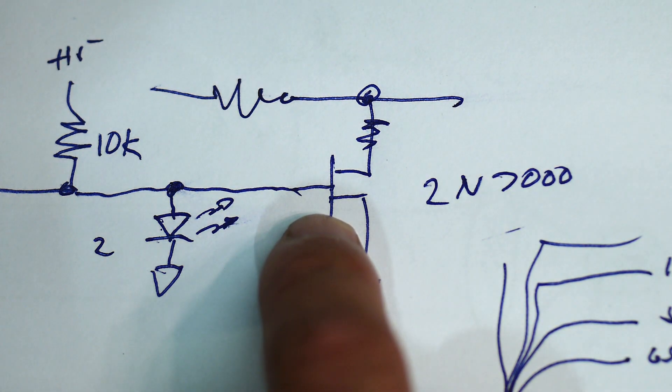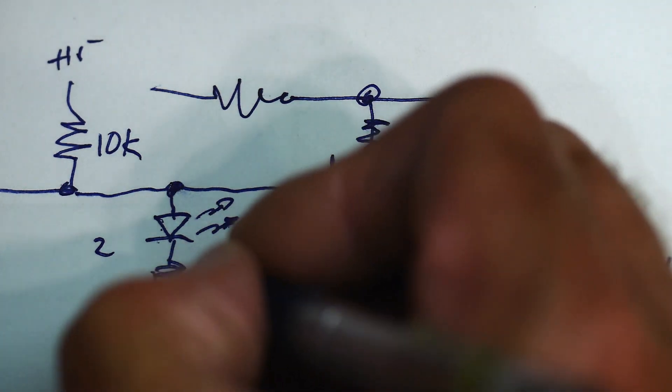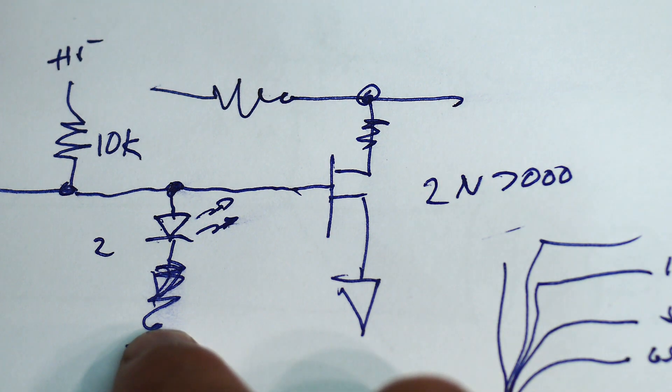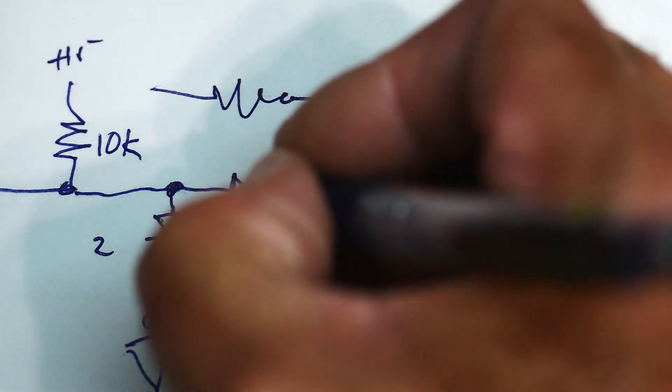Anyway, I think I can just fix this by putting a resistor here. Or I could put the LED in here instead, so